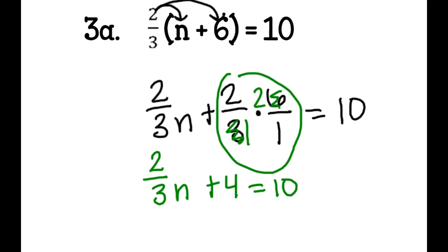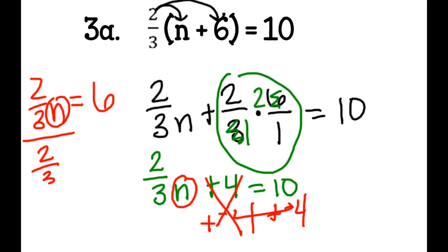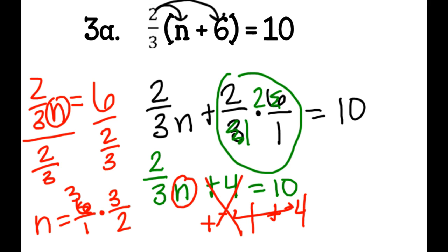To get n by itself, I add a negative 4 to both sides. The 4 plus negative 4 cancels out, and 10 plus negative 4 is 6. So I have 2 thirds n equals 6. To undo the multiplication by 2 thirds, I divide both sides by 2 thirds. n equals 6 times 3 halves — keep, flip, change. 2 goes into 6 three times, so it's 3 times 3, which is 9. n equals 9. I circle it, and that's my answer. On a problem with this much work, I strongly recommend checking your work.